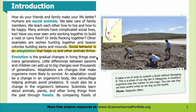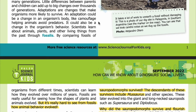Evolution is the gradual changes in living things over many generations. Little differences between parents and children can add up to big changes over thousands of generations. Adaptations are changes that make organisms more likely to survive. An adaptation could be a change in an organism's body, like camouflage helping animals avoid predators, or it could be a change in the organism's behavior. Scientists learn about animals, plants, and other living things from the past through fossils. By comparing fossils from different times, scientists can learn how they evolved — but it's really hard to see from fossils how animal behavior evolved.